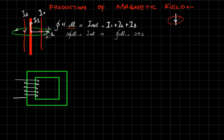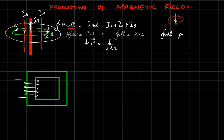Now simplifying this equation, we get the magnetic field intensity H equals I over 2πr. This clearly explains that as we move away from the current-carrying conductor, the magnetic field intensity drops. If I take another circle farther out, the magnetic field intensity at that point will be smaller. We will explain later how this affects magnetic flux density. The key point is that dl represents the path of the magnetic field.